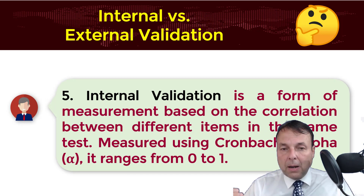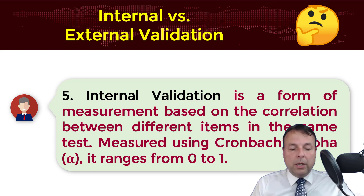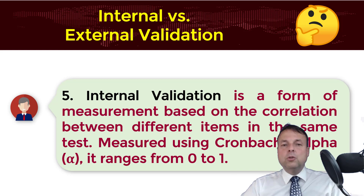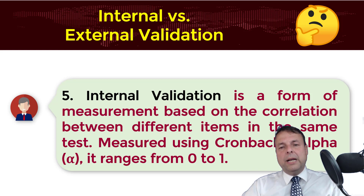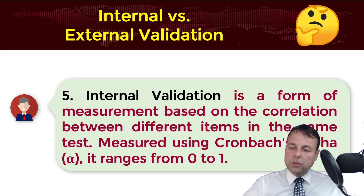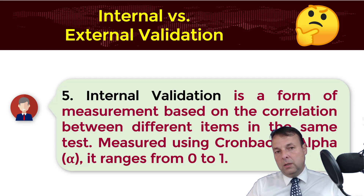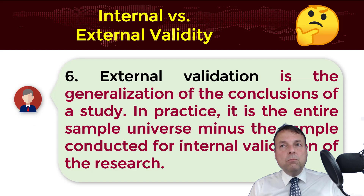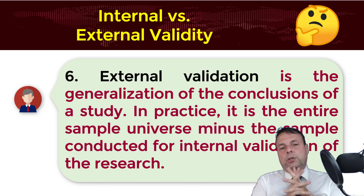What about internal versus external validation? Internal validation is a form of measurement based on the correlation between different items in the same test — basically it is the Cronbach's alpha, which varies from zero to one.